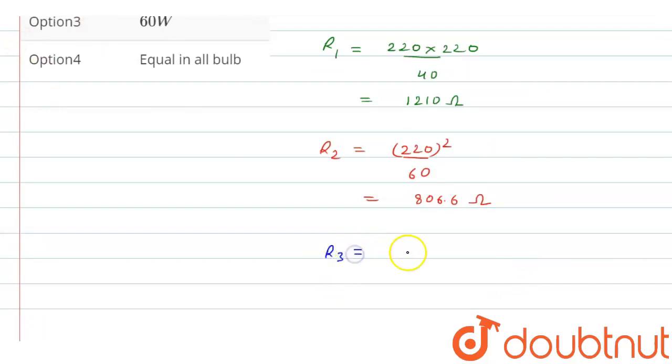R3 will be equals to 220 whole square divided by 100. It will be equals to 484 ohm.